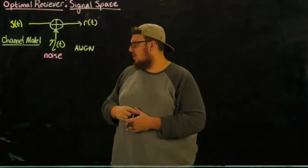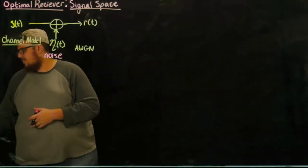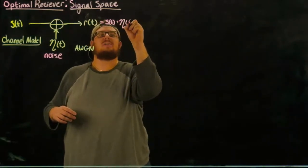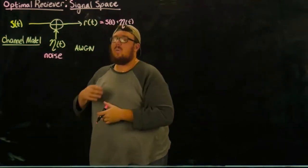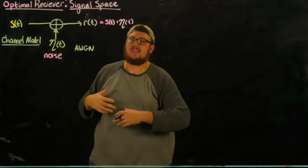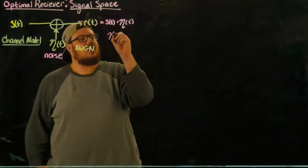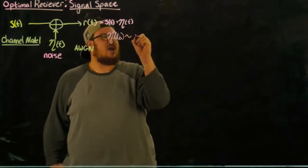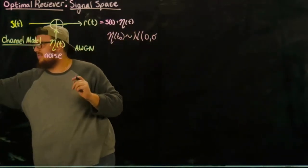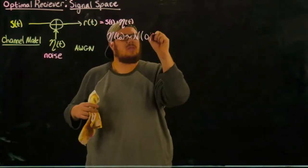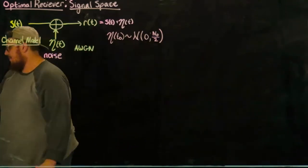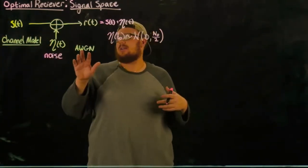This noise is specifically called additive white Gaussian noise (AWGN). The received signal r(t) can be written as the sent signal s(t) plus the noise η(t) — that's the additive part. The white Gaussian part means that at any point in time, the value that η(t₀) takes on is distributed as a normal distribution with zero mean and variance N₀/2. The N₀/2 convention is standard — this is the variance of the noise and it's zero mean. That covers the Gaussian part.